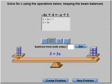3 equals 3x. So now, when I get to the point where I have just plain numbers on one side, and letters on the other side, is the point when I divide.